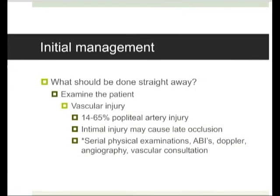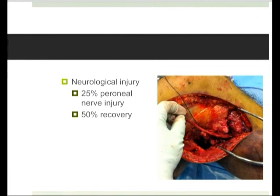Neurological injury is the other issue — peroneal nerve injury rate is about 25 percent with a recovery rate of approximately 50 percent if injured. Reduction and immobilisation should be done promptly. Immobilisation options are bracing or ex-fix; open dislocations, the need for vascular repair, and gross instability are probable indications for ex-fix. A Mayo Clinic study compared long-term results of ex-fix versus bracing and found bracing had better long-term range of motion, but it was non-randomised — they were clearly putting frames on the worst cases, so it doesn't definitively answer the question.